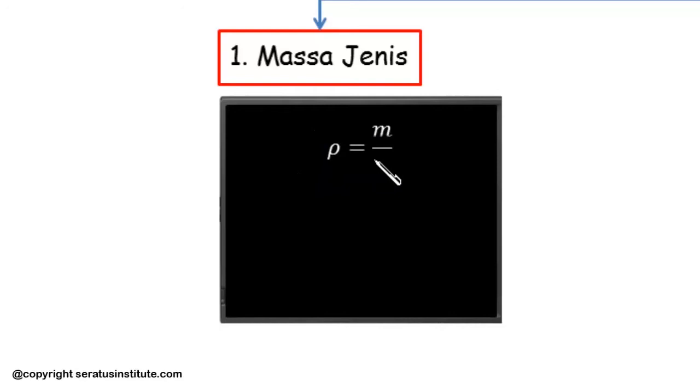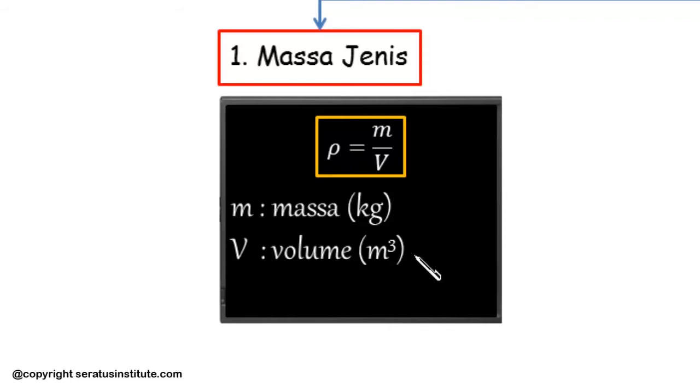The first one is mass density or density of mass, symbolized as rho. As we learned in middle school, the formula for mass density rho equals M per V, mass per unit volume. Where M is mass with units of kilogram, and V is volume with units of cubic meters. So rho is mass density with units of kilogram per cubic meter.